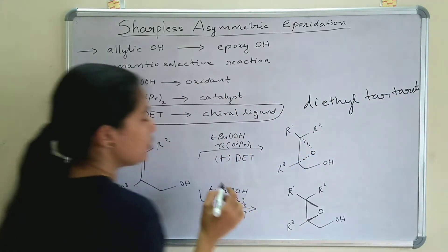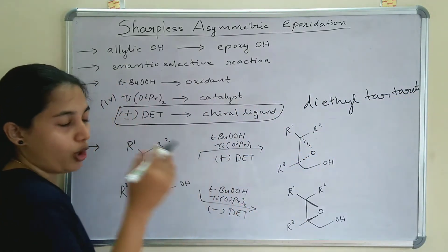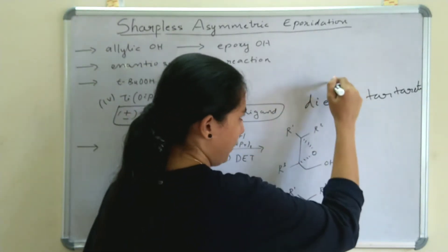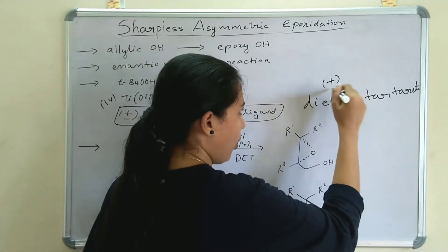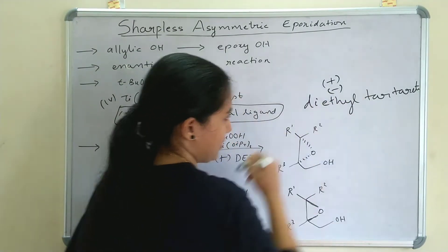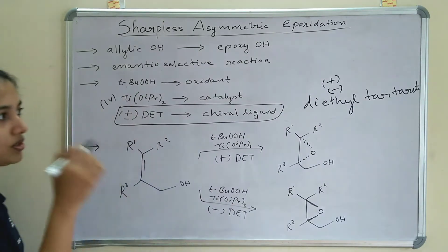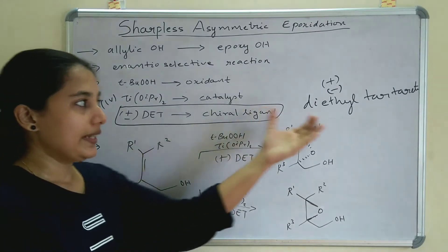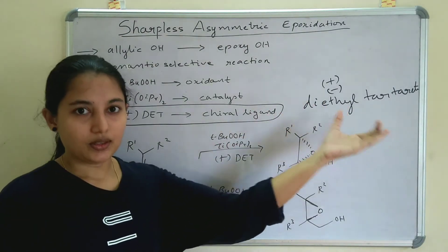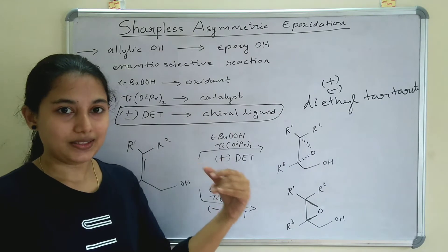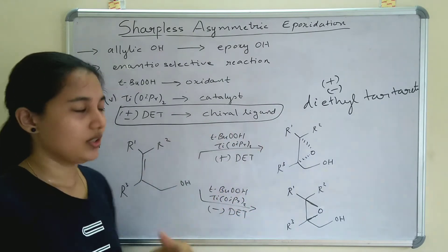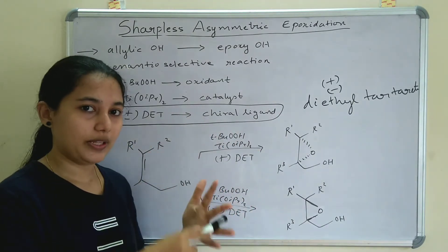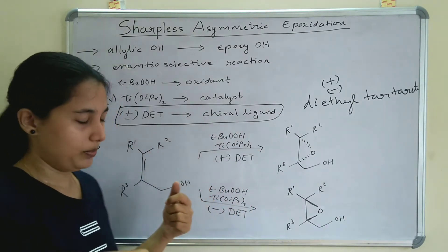The stereochemistry of the product depends upon the chiral ligand DET — diethyl tartrate. The product depends upon whether DET is plus (+) or minus (−). By looking at the DET, we can predict the product — whether the epoxide will be above the plane or below the plane.